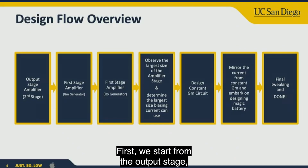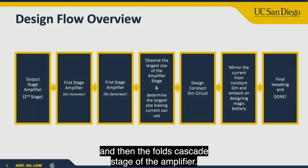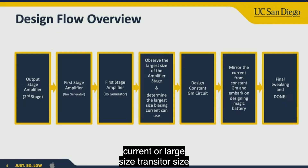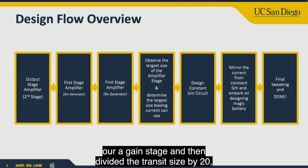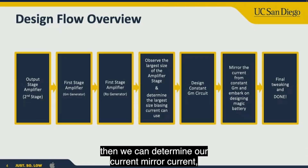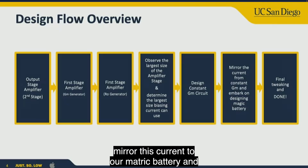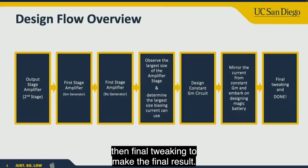We start from the output stage, then design the folded cascode stage of the amplifier. After that, we observe the largest transistor size across all gain stages, divide that transistor size by 20 to determine the current mirror current, then design the biasing circuit to mirror this current, and finally do tweaking to get the final result.